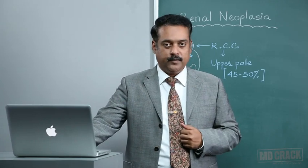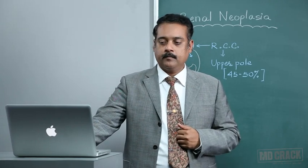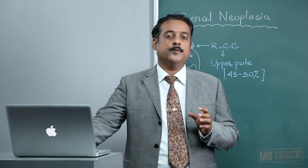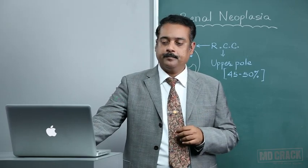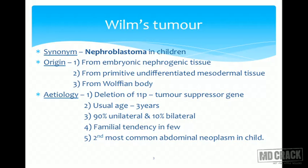First we will begin with Wilms Tumor. Another name for Wilms Tumor is Nephroblastoma in children. Regarding its origin, it originates from embryonic nephrogenic tissue, from primitive undifferentiated mesodermal tissue, and also from the Wolffian body. That is why it is called Nephroblastoma.